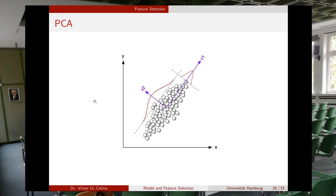For example, suppose you have points in two dimensions — height and weight of an animal. If you plot the points, you get a cloud, and PCA discovers the direction v1 in which points are most dispersed. This becomes the first eigenvector, or first component. The second eigenvector v2 is orthogonal to v1. PCA tells you to look at the data along v1 and v2 instead of the original x and y axes.